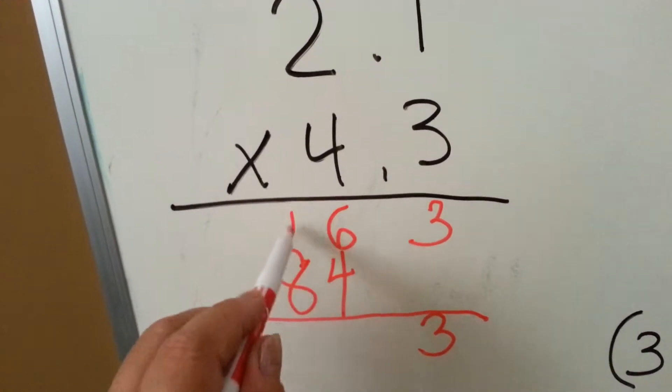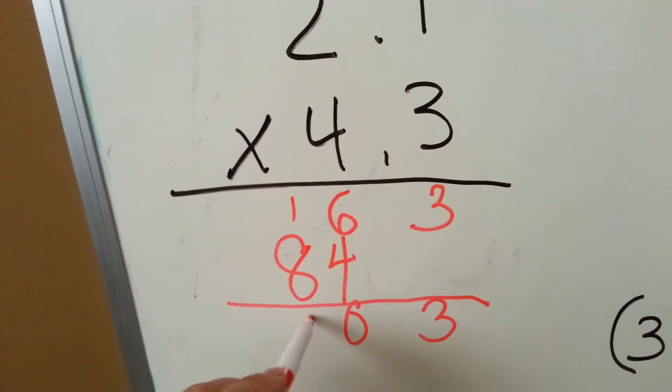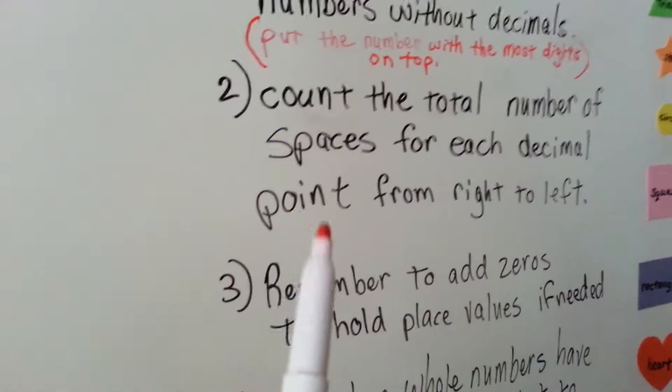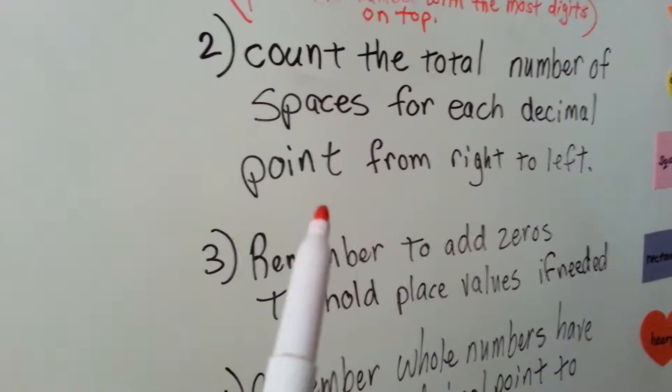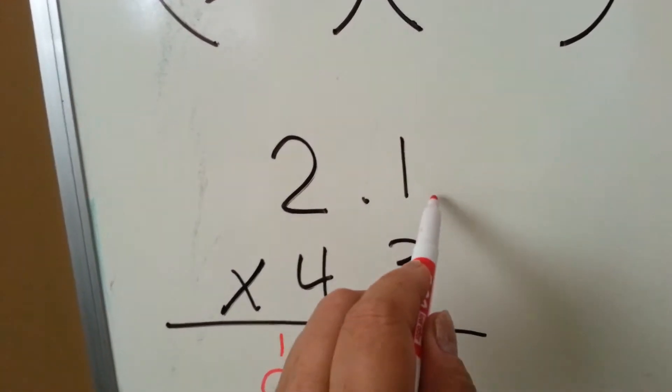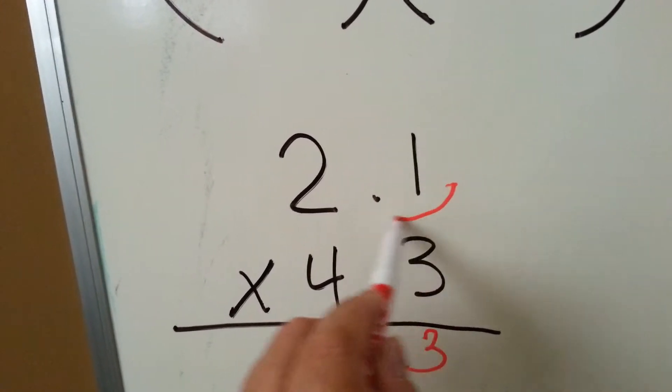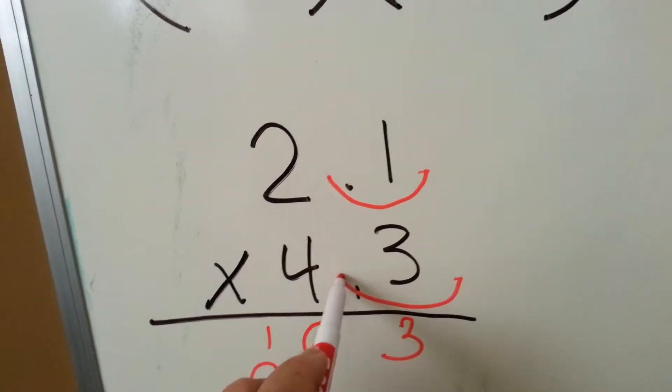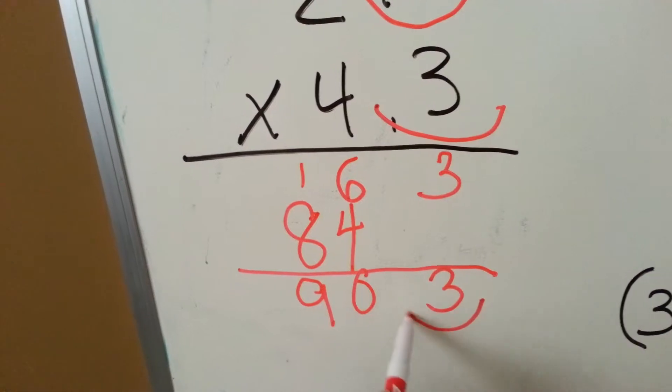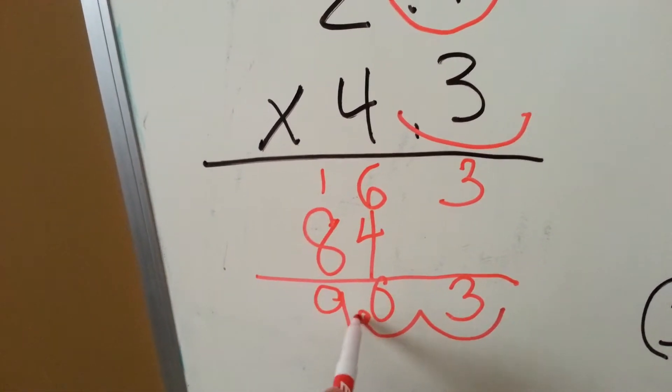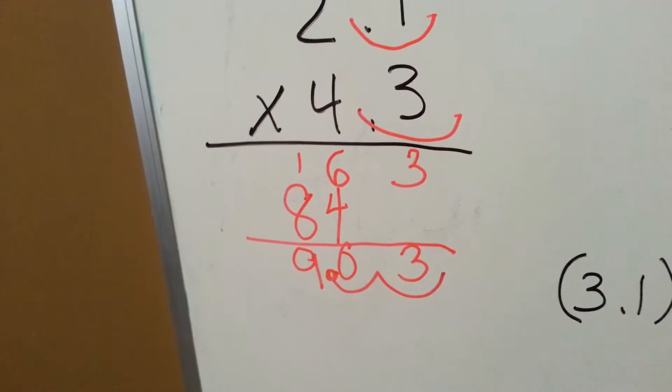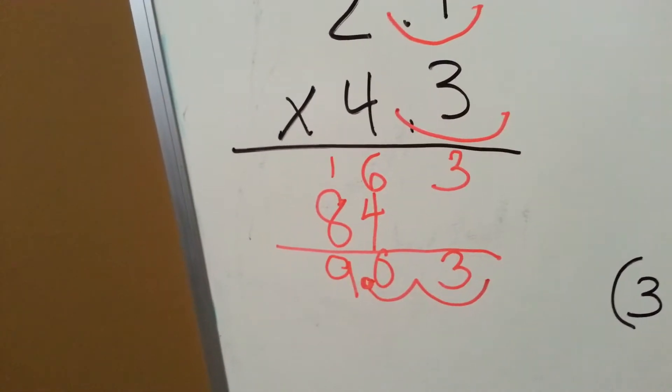Now we add them up. 3. 6 plus 4 is 10. Carry the 1. 9. And now, number 2 says, count the total number of spaces for each decimal point from right to left for the answer. So we're going to start counting here and go 1, 2. So our answer needs 2 spaces. 1, 2. So the answer, the product, is 9.03 or 9 and 3 one-hundredths.